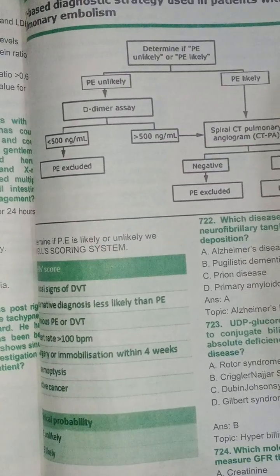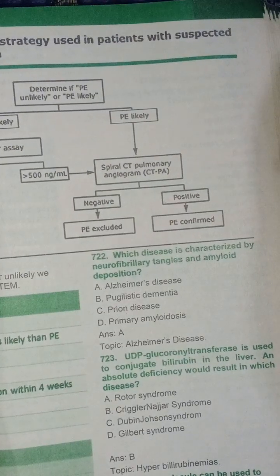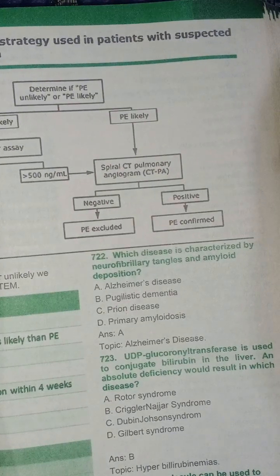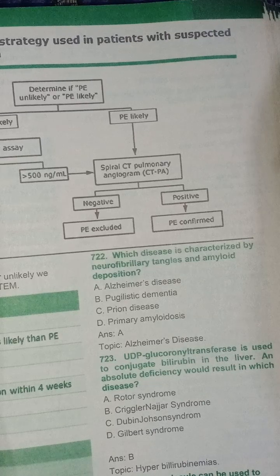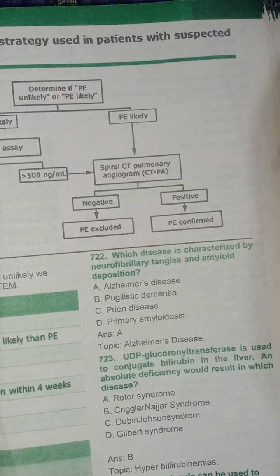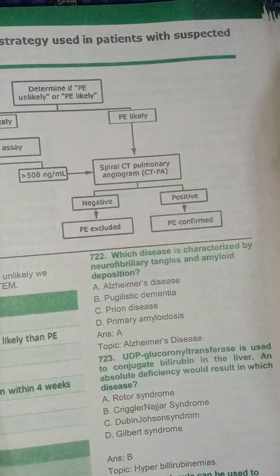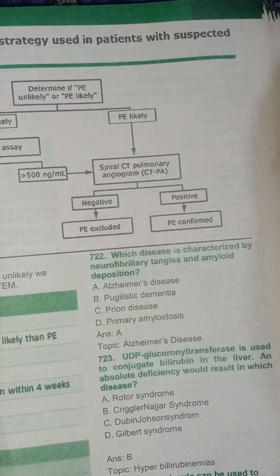MCQ 722: Which disease is characterized by neurofibrillary tangles and amyloid deposition? Before answering, note that bilirubin undergoes glucuronidation conjugation in the liver.